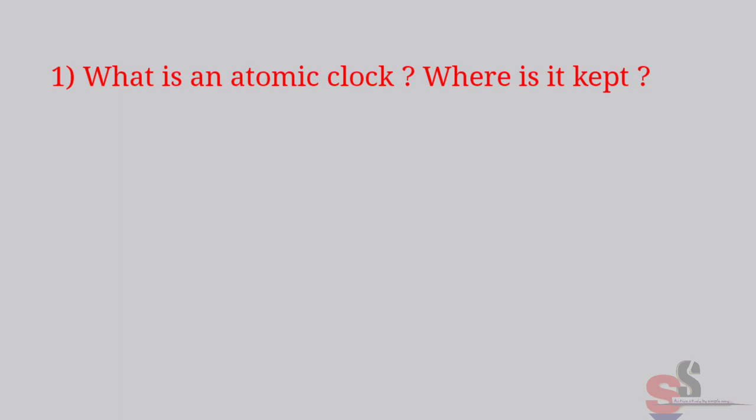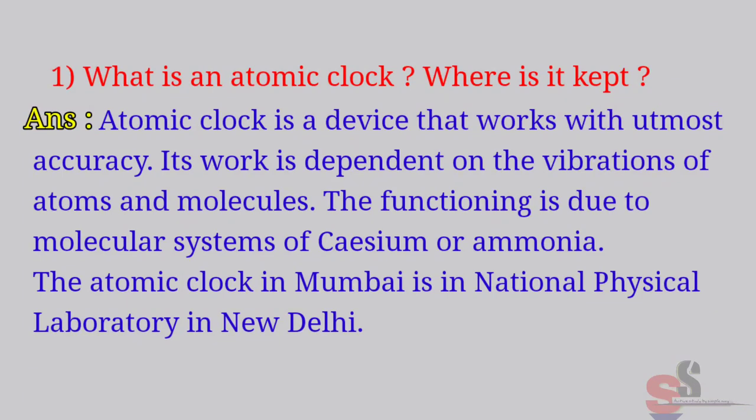Find out. Textbook page number 43. First, what is an atomic clock? Where is it kept? Answer: Atomic clock is a device that works with utmost accuracy. Its work is dependent on the vibrations of atoms and molecules. The functioning is due to molecular system of calcium or ammonium. The atomic clock in Mumbai is in National Physical Laboratory in New Delhi.